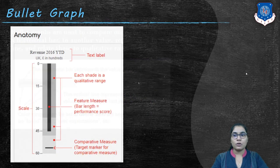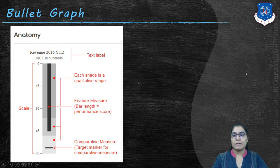Now let's discuss the anatomy of bullet graph. As you can see, this example shows the revenue of 2016 YTD. The upper part of bullet graph is the text label for the given bullet graph. Our bullet graph contains 4 different parameters. The first one, that is the vertical line, is called comparative measure which is the target marker for comparative measure. You can set your goals as the comparative measure.